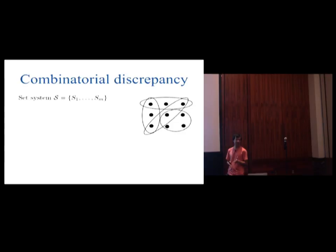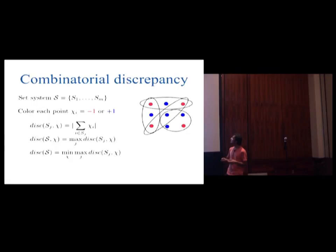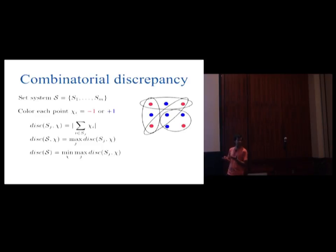Let me start by explaining what discrepancy — specifically combinatorial discrepancy — is. We are provided a set system and we want to colour each point red or blue such that each set is as balanced as possible, meaning that each set has roughly equal numbers of red and blue points. Discrepancy is a notion by which we quantify this balance. Formally, for a given colouring, the discrepancy of a set is the absolute difference between the number of red and blue points it contains, and the discrepancy of the set system is the maximum discrepancy over all sets.